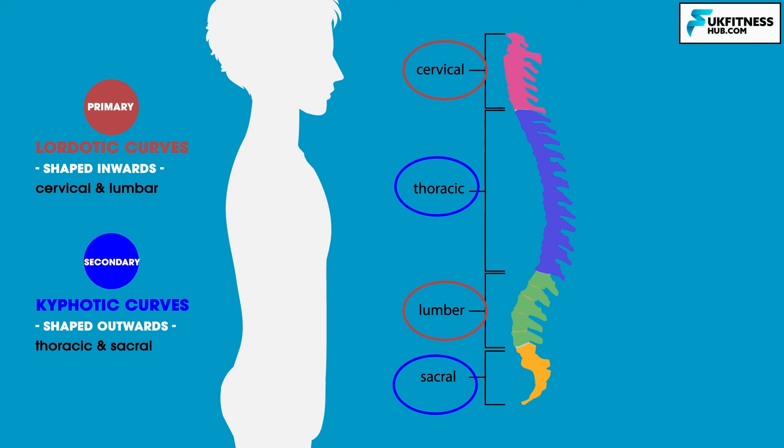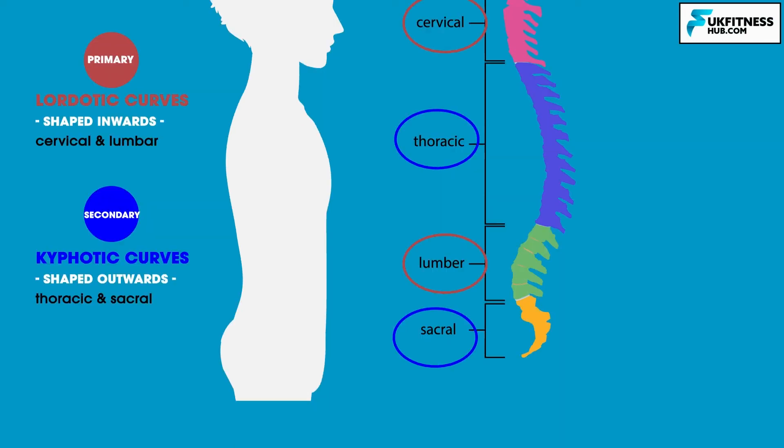Babies are not actually born with an S-shaped spine — they're born with a C-shaped spine.